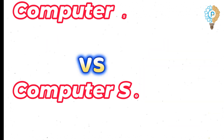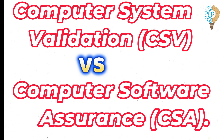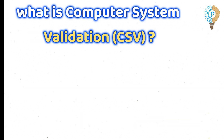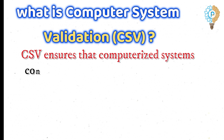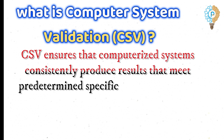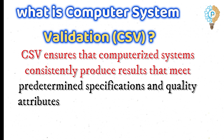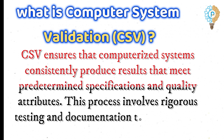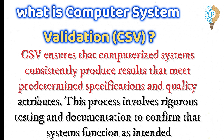Within the context of software validation, it's essential to distinguish between computer system validation (CSV) and computer software assurance (CSA). CSV ensures that computerized systems consistently produce results that meet predetermined specifications and quality attributes. This process involves rigorous testing and documentation to confirm that systems function as intended.